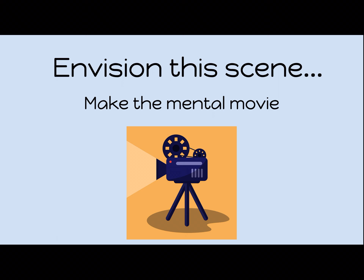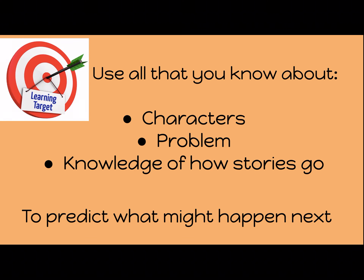You made that prediction based on the knowledge of the situation, the potential problems, and because you know a lot about how stories usually go. You made a smart text-based prediction and not a wild guess. And that's our learning target for today. Today, you are going to predict what might happen next using what you know about characters, problems, and the knowledge of how stories usually go — and we are not going to make any wild random guesses.